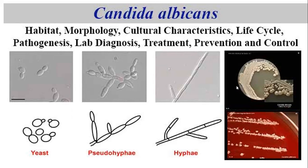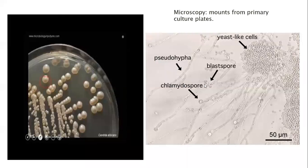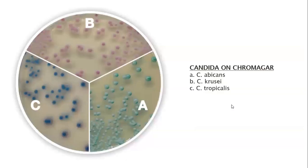This is how colonies of Candida albicans look on Sabouraud agar without cycloheximide. On microscopy you can see yeast budding and pseudohyphae. In addition, you can also see blastospores and chlamydospores. Blastospores are the budding spores and chlamydospores are developed from the pseudohyphae. On chromogenic agar, Candida albicans colonies are green, Candida tropicalis colonies are blue, and Candida krusei colonies are pink.